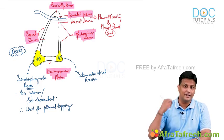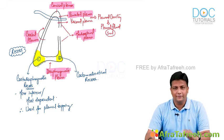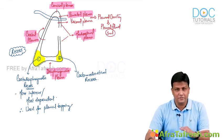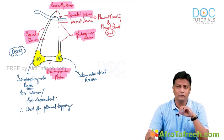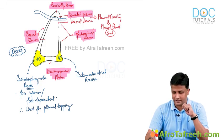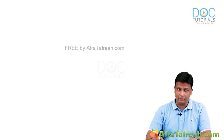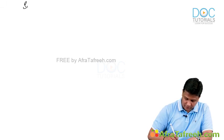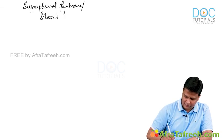Now let me tell you about an important fascia present at the thoracic inlet. Near the thoracic inlet, covering the apex of the lung, is a fascia referred to as Sibson's fascia. This is also known as the suprapleral membrane.